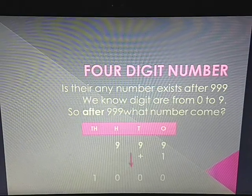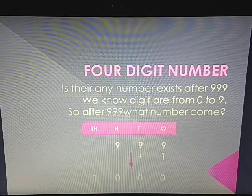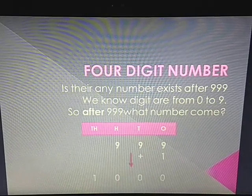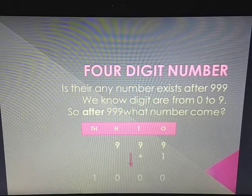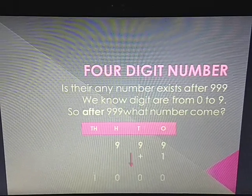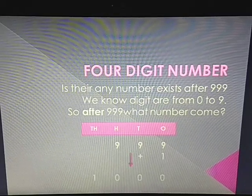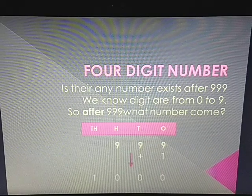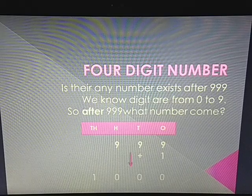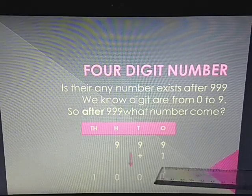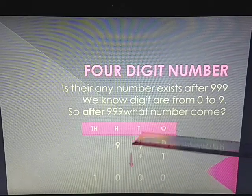In the previous chapter we have learned up to 999. Is there any number that exists after 999? Yes, after 999 if we add plus 1 we will get the next number. We know from our previous chapter that to get the next number we have to add plus 1. So with 999 we add plus 1: 9 plus 1 is 10, write 0 and carry 1, then 1 plus 9 is 10.